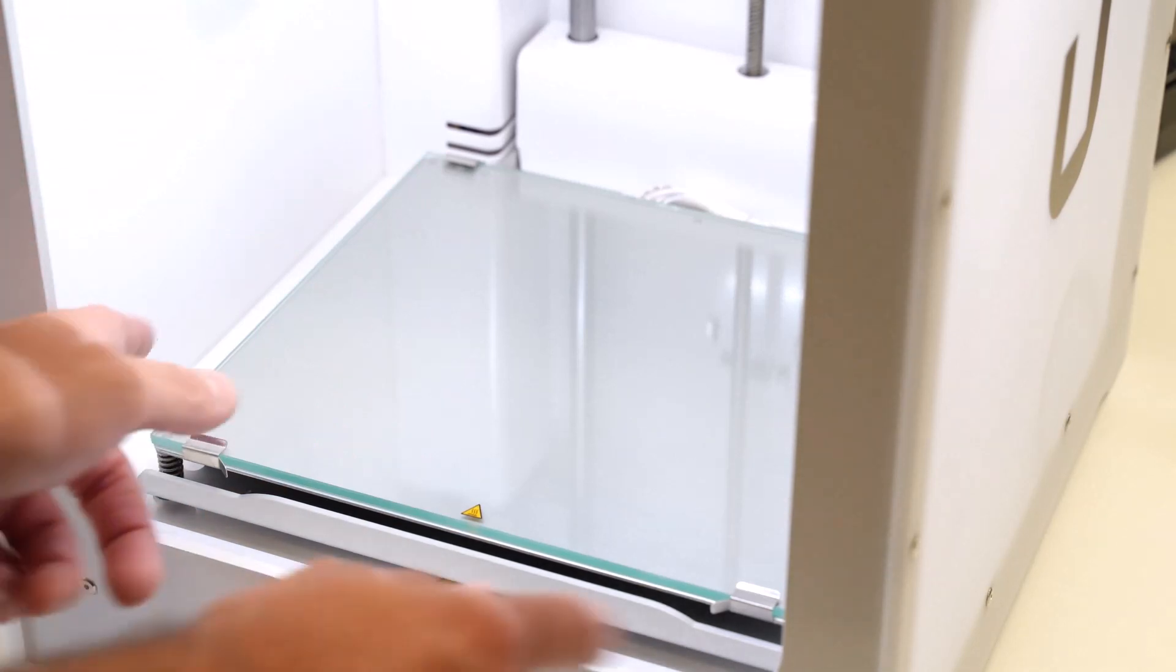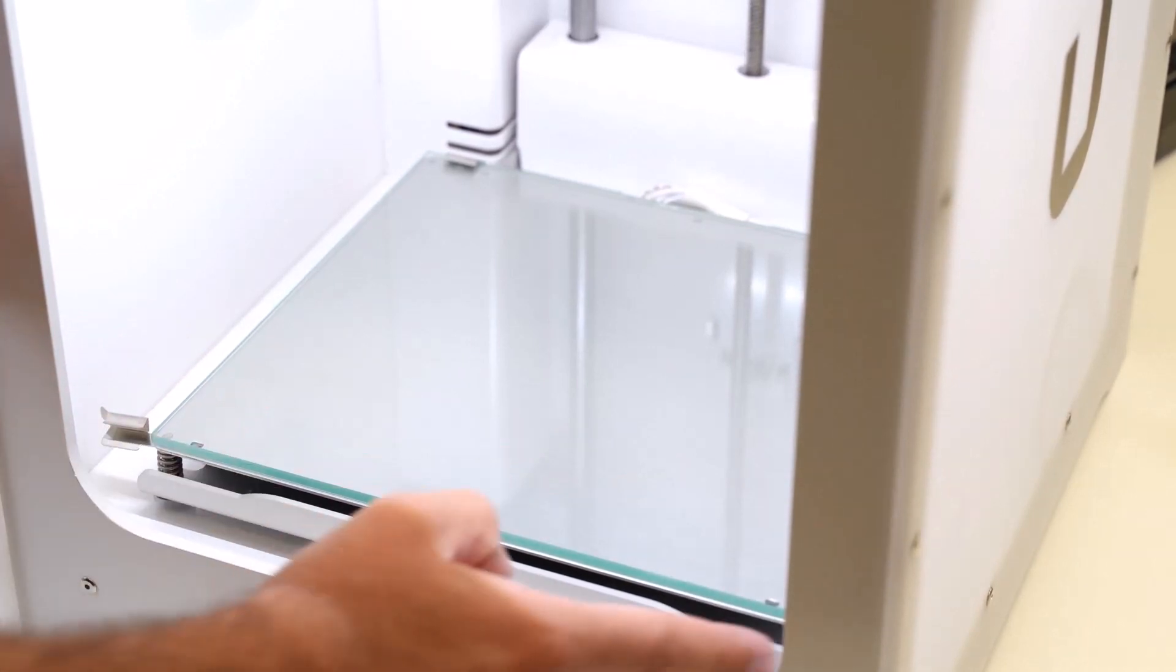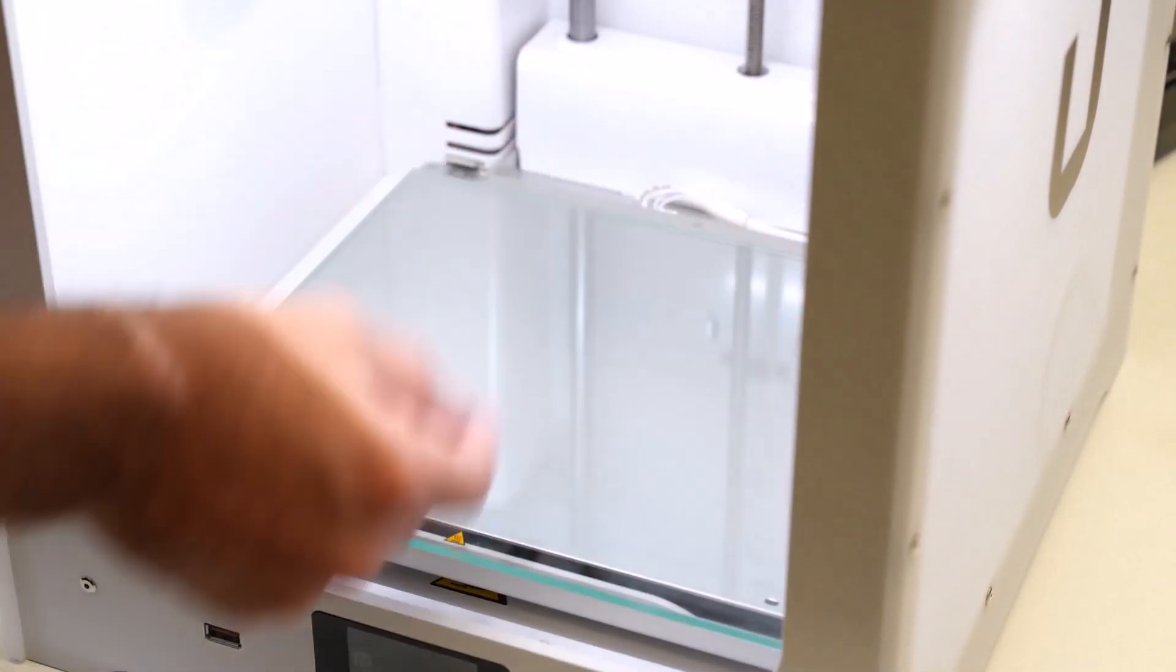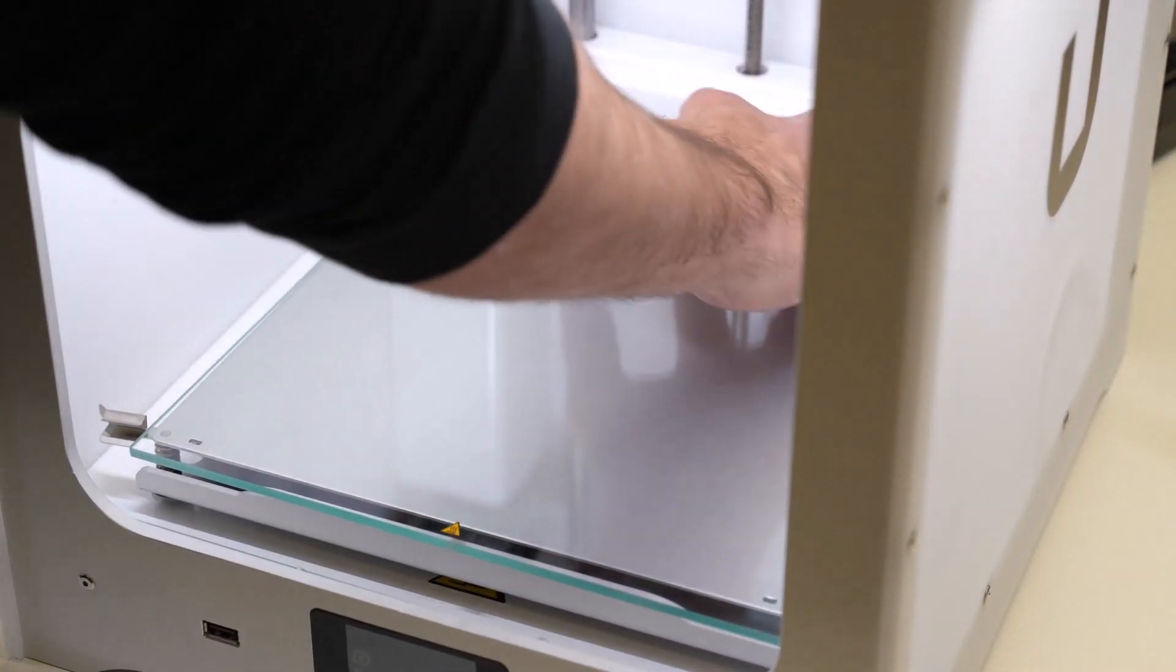In order for us to clean this we'll take the plate out like so. When we remove this a good tip is to pull it from the back center forward rather than lifting it up like so, just so we don't put any excess pressure on the clips at the back.